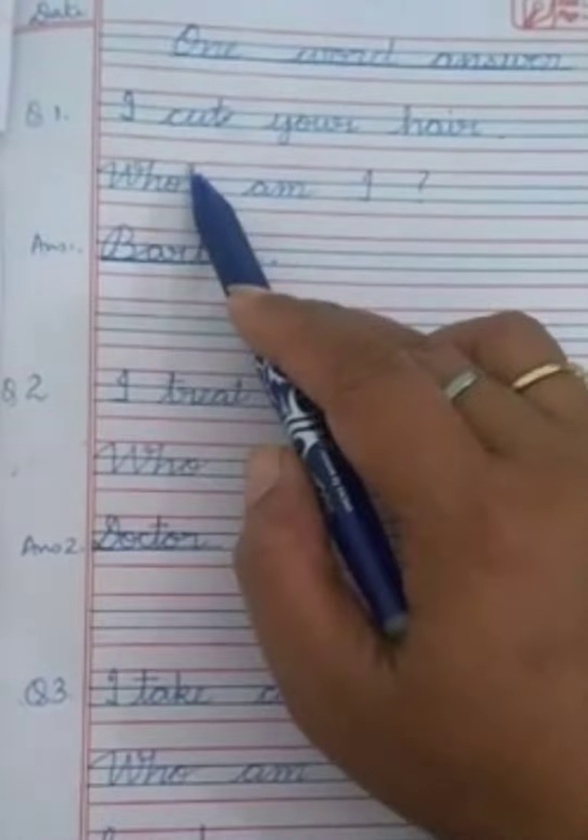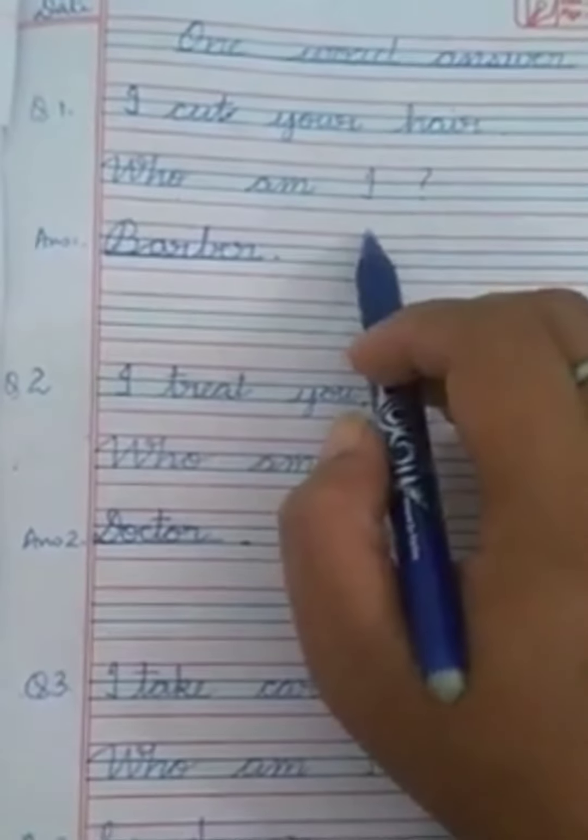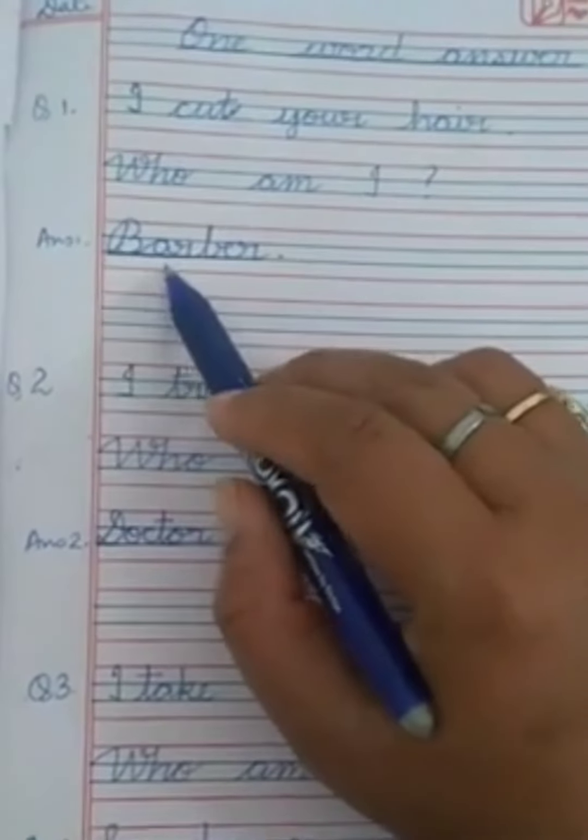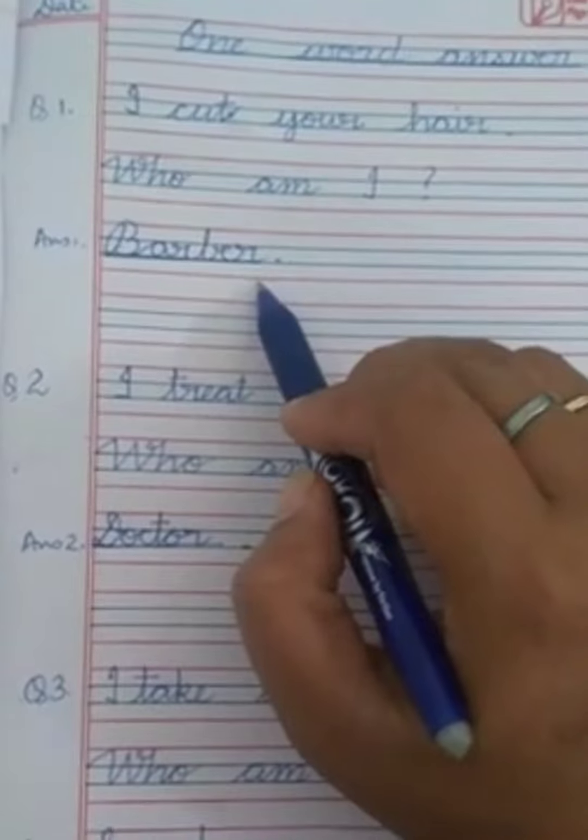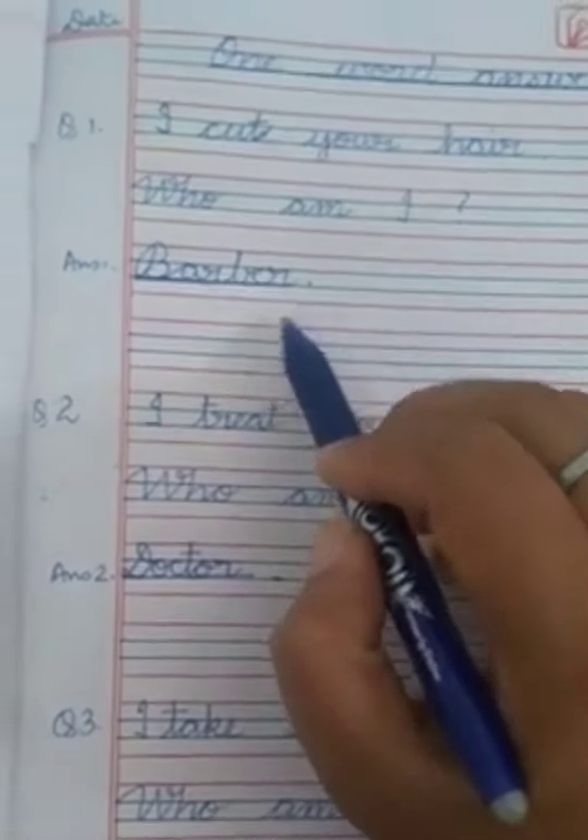The first one is: I cut your hair, who am I, question mark. Answer is barber, B-A-R-B-E-R, barber, full stop. Then leave one line, come to the next line.